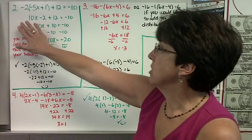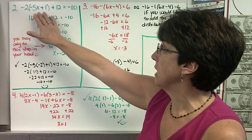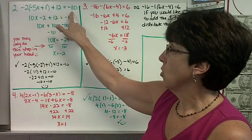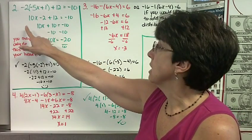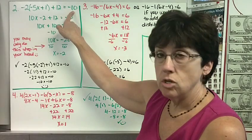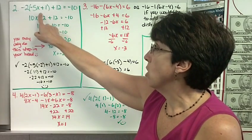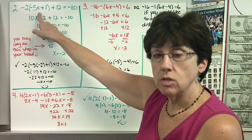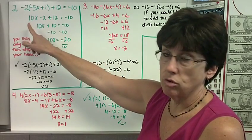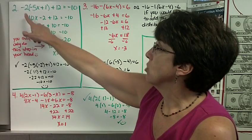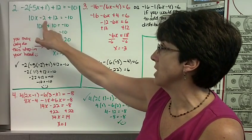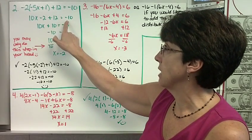Three more problems. Here's another: negative 2 times the quantity of negative 5x plus 1, plus 12, equals negative 10. I'm going to distribute to get rid of the parentheses, because when solving for x I can't use order of operations directly — I have to use the distributive property. Negative 2 times negative 5 is positive 10x, and negative 2 times positive 1 is negative 2, plus 12, equals negative 10.